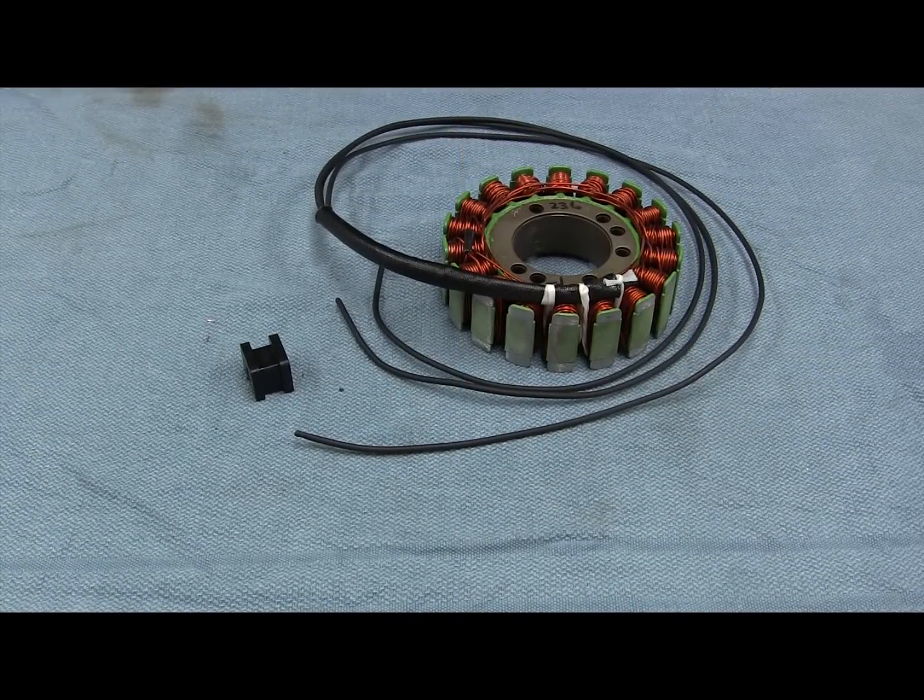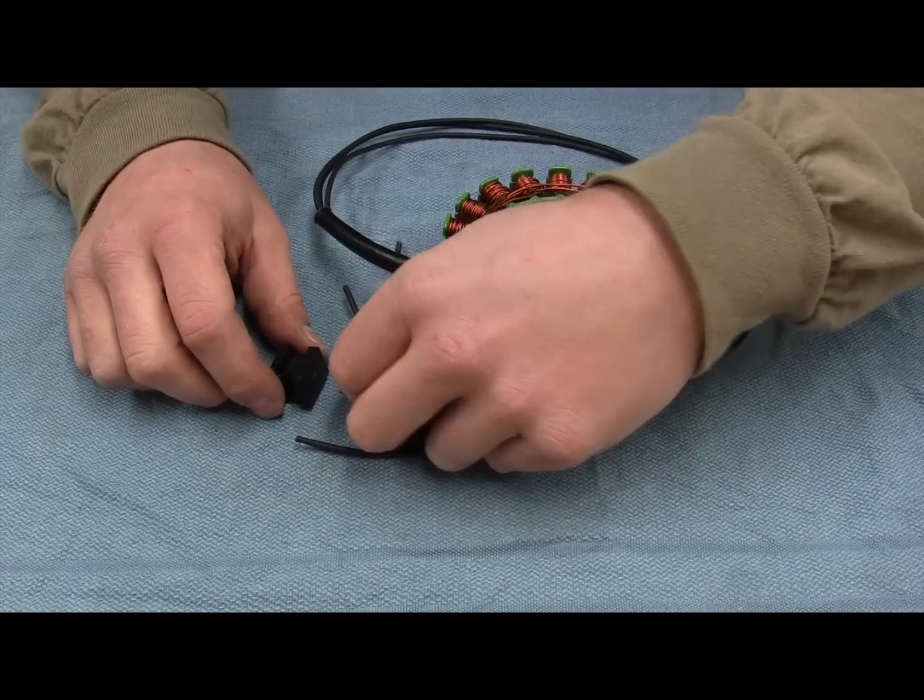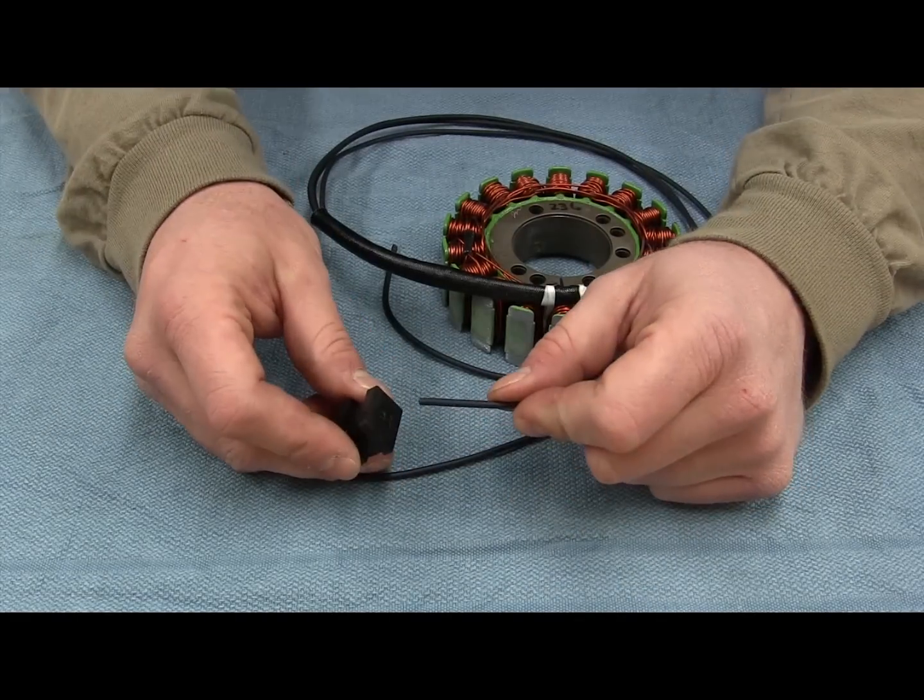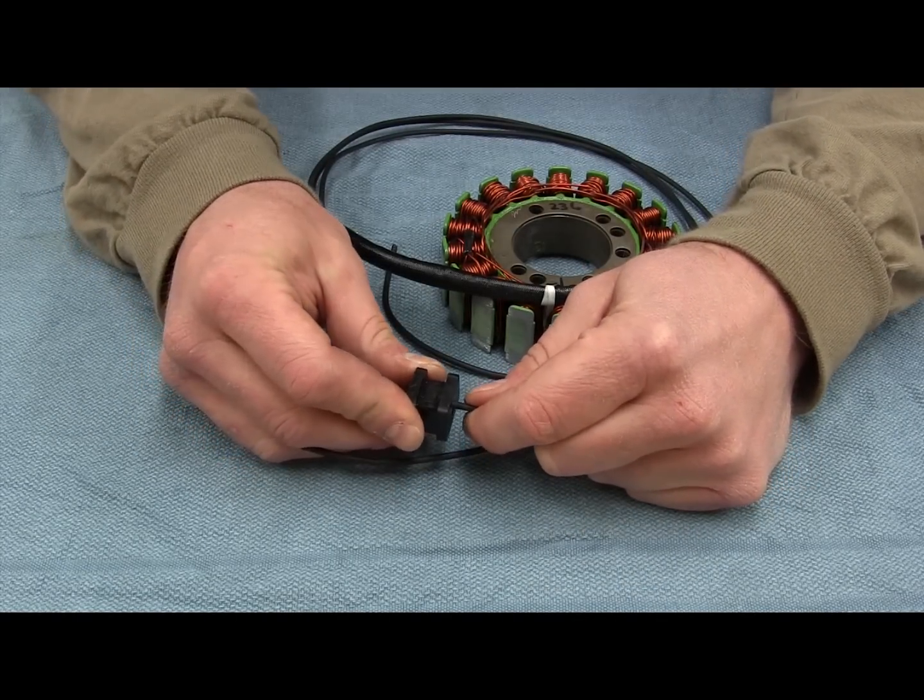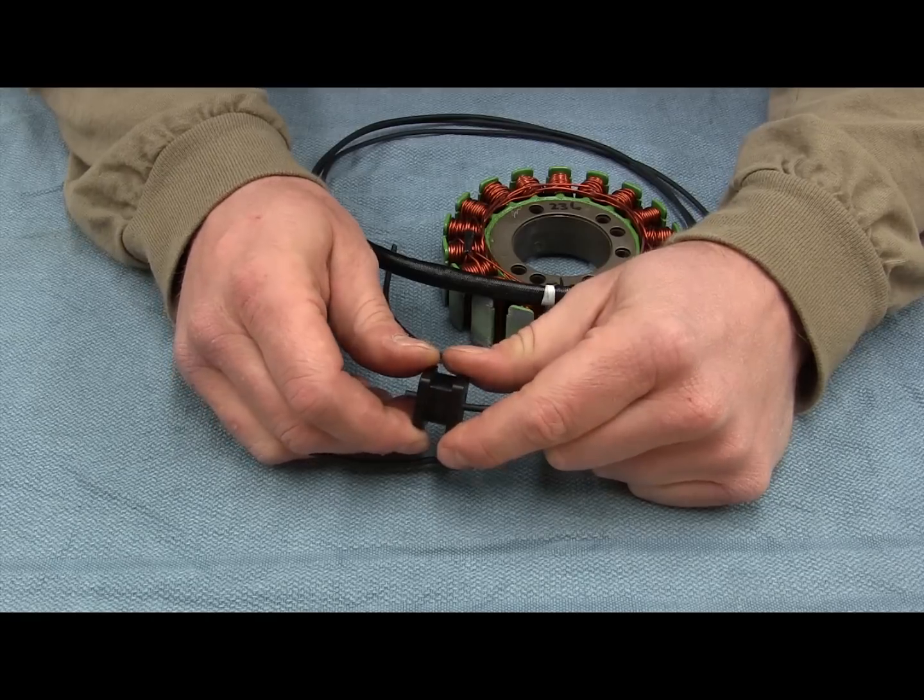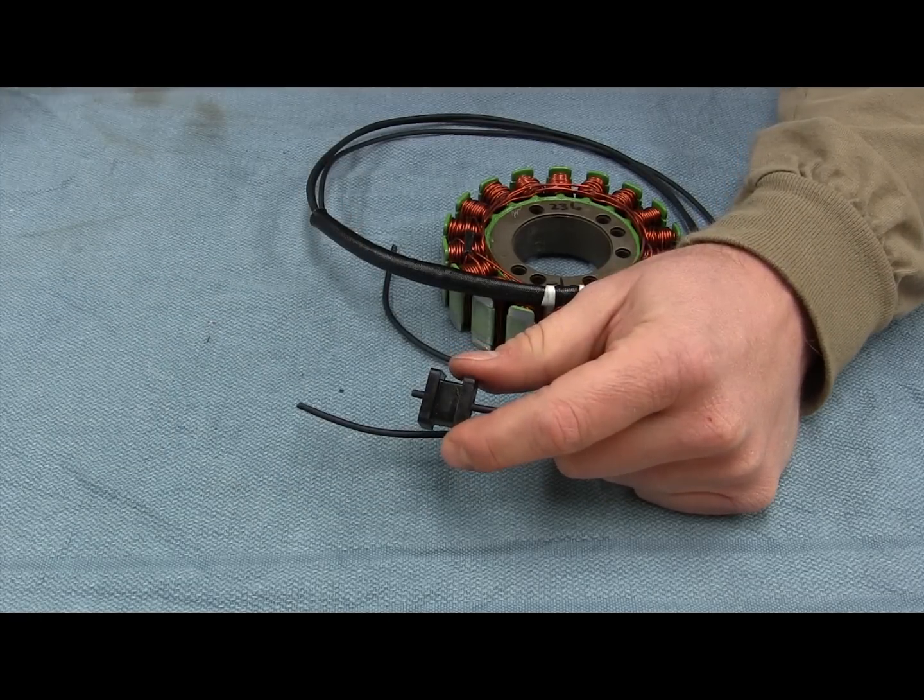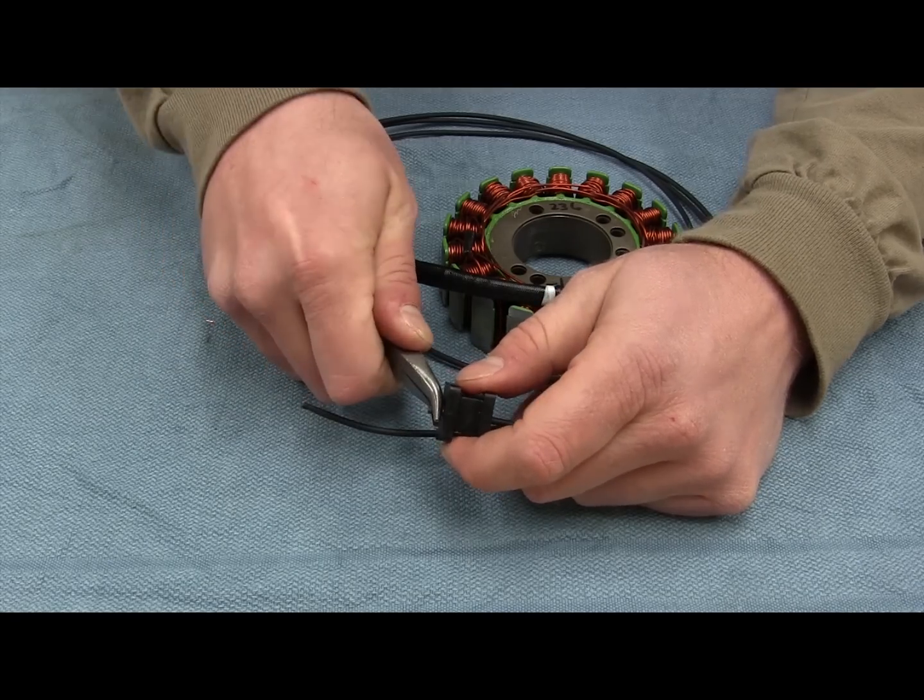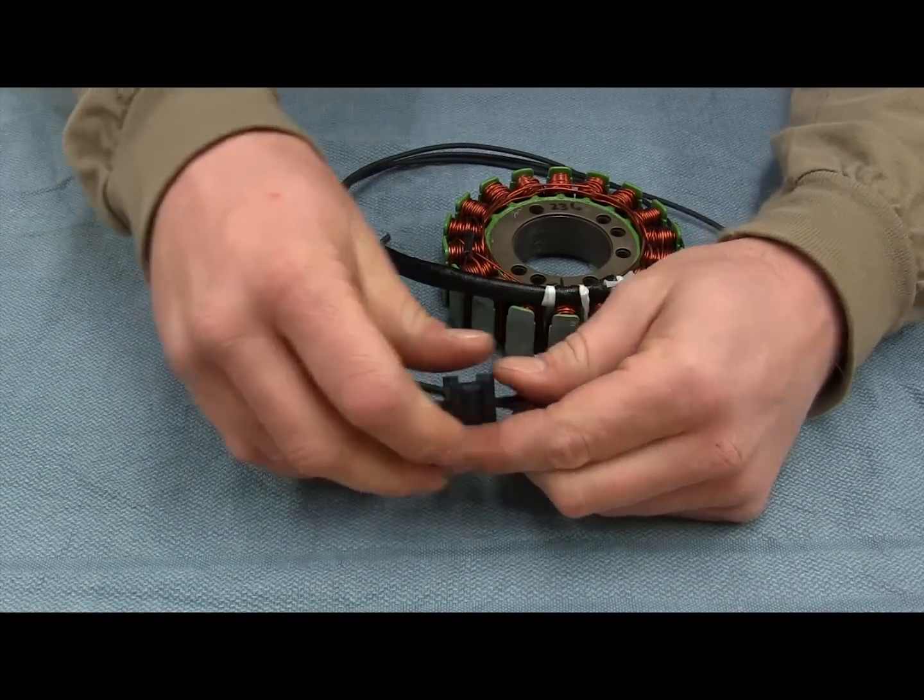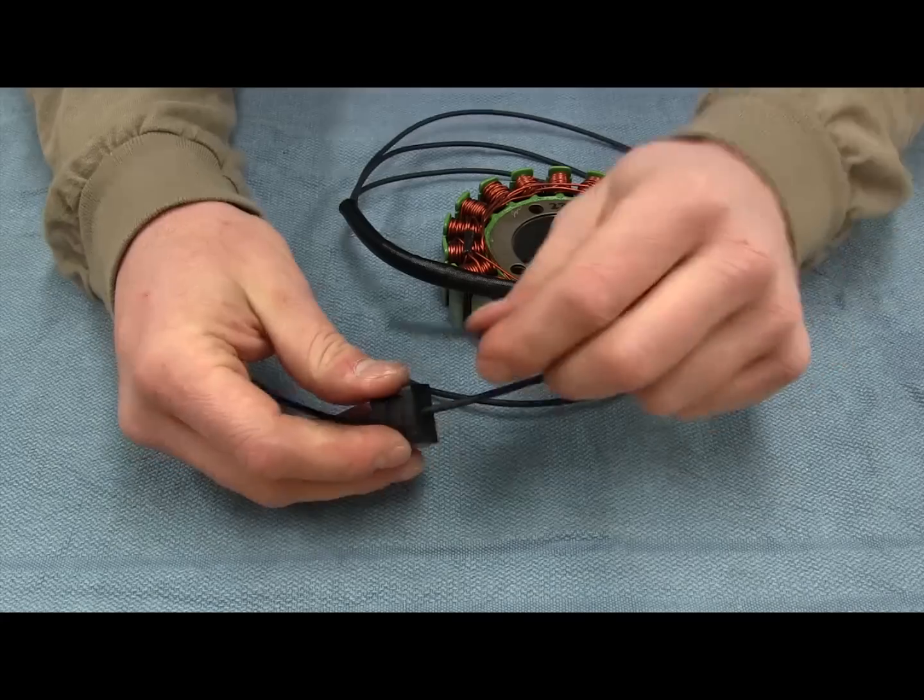Now we've got our grommet from the old stator ready to install it on our new replacement stator. Go ahead and insert the wires into the grommet in the same order as the original. Once you've got the wire poked through a little bit, this is where the needle nose pliers make things easier. Go ahead and grab the tip of the wire, just pull it right through. Continue with the rest of your leads.